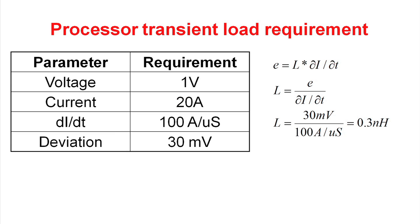Here is a possible processor transient load requirement you might see. The processor wants a stable input voltage of 1 volt. It may draw as much as 20 amps, and it may go from needing no current at all to needing that full 20 amps in a very short time period.